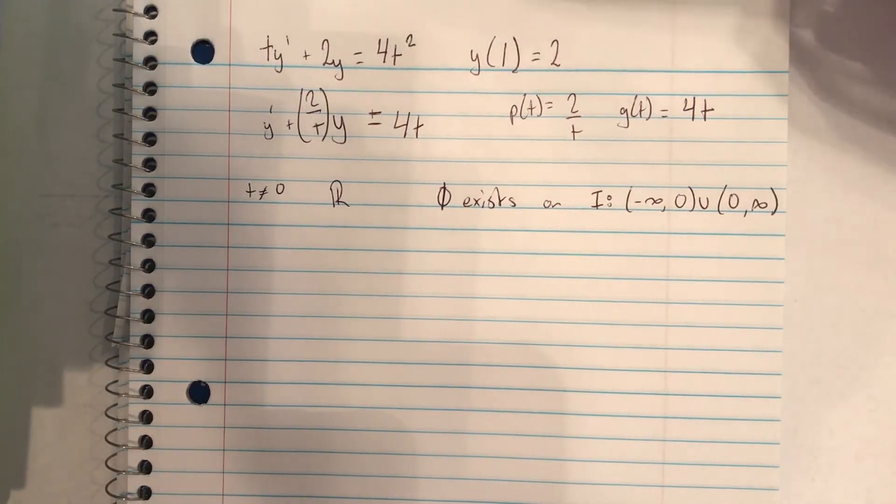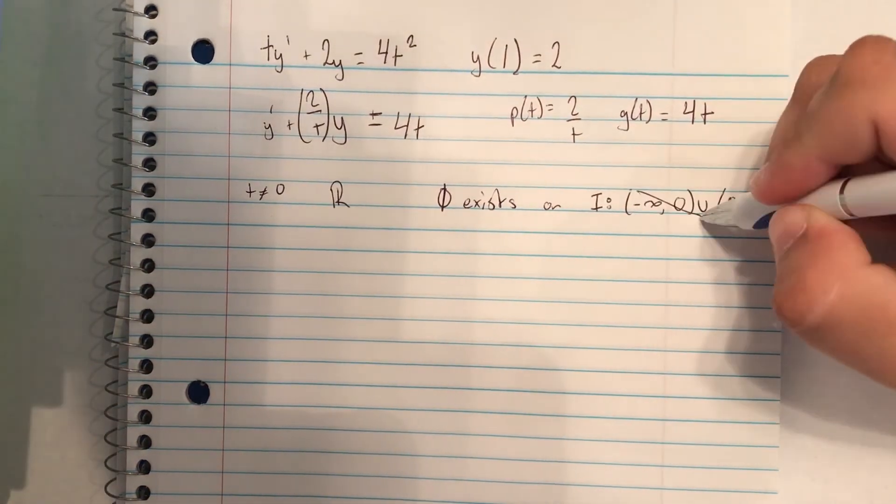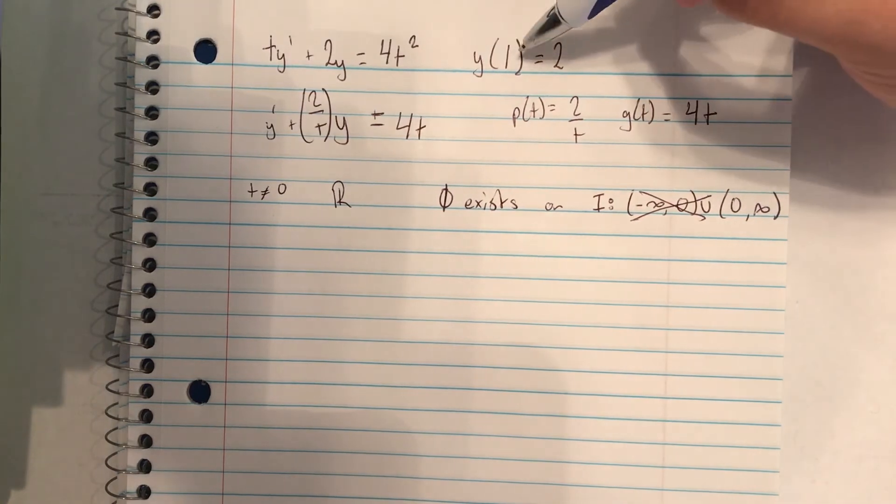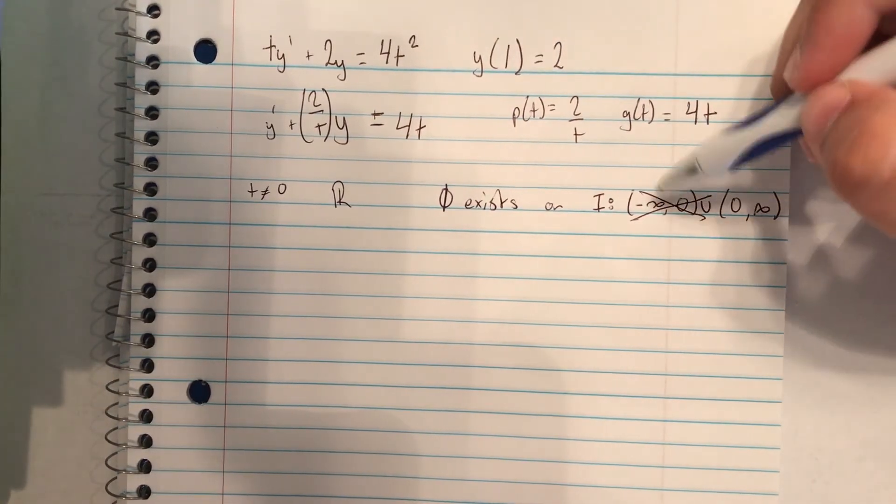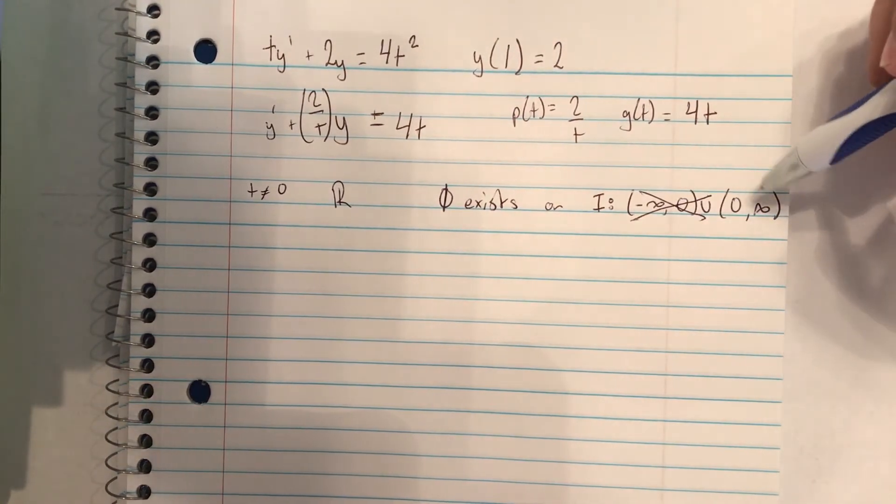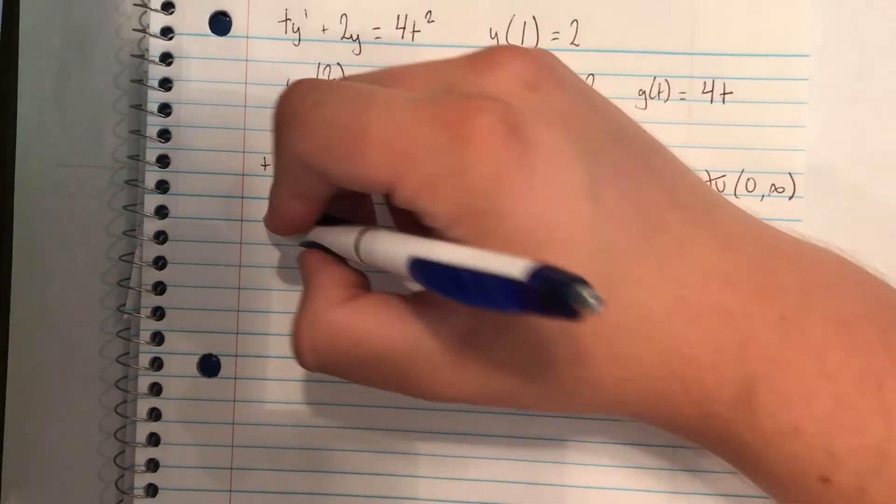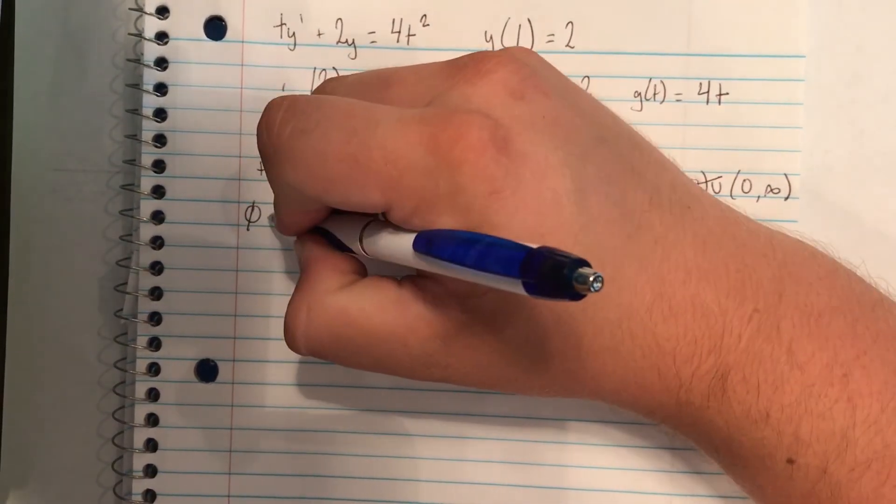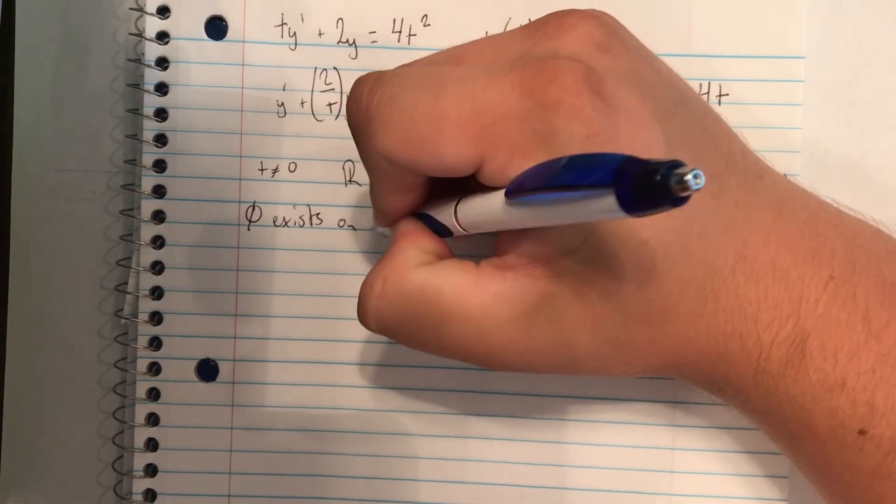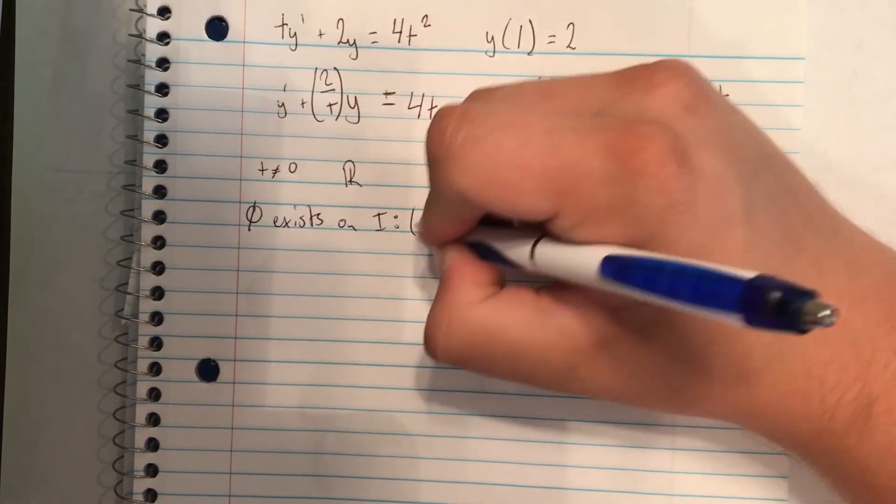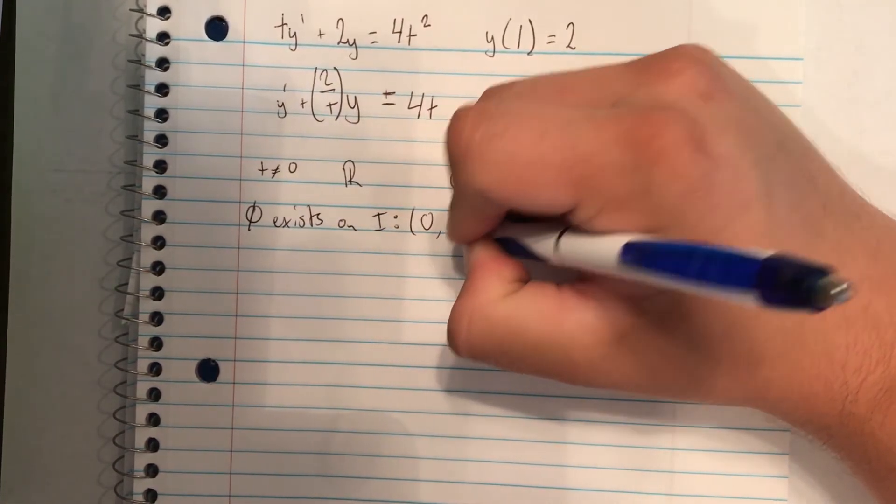And now we look at this initial condition. So we have y(1) = 2. That means that we can take this left side out because we have x equals 1, which can never be in the negative interval. So our final solution exists on the interval 0 to infinity.